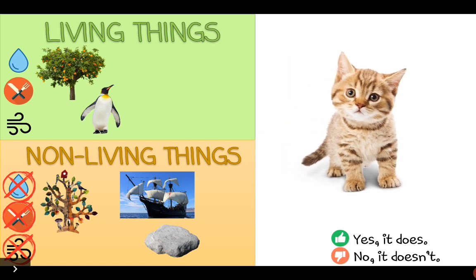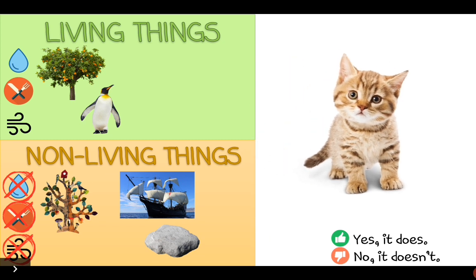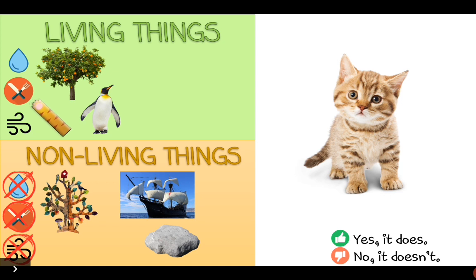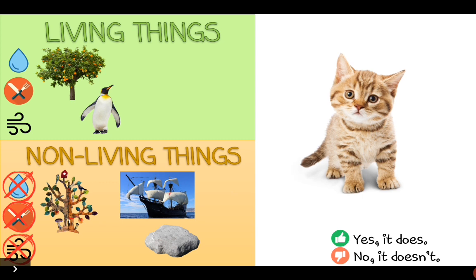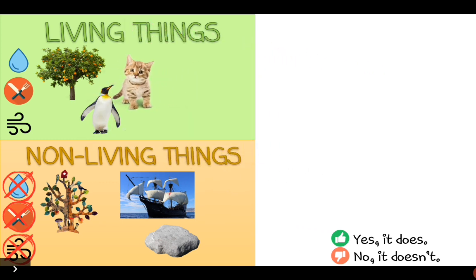And finally, we have this. This is a cat — a baby cat, which is called a kitten. Is this kitten a living thing or a non-living thing? Let's see. Does the cat need water? Yes, it does. Does the cat need food? Yes, it does. And does the cat need air? Yes, it does. Fantastic — this cat is a living thing, and it's very cute, isn't it? Good job!